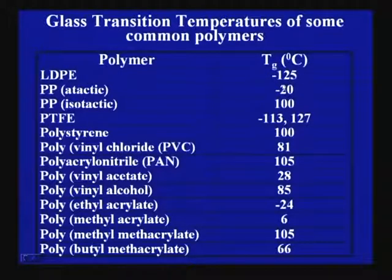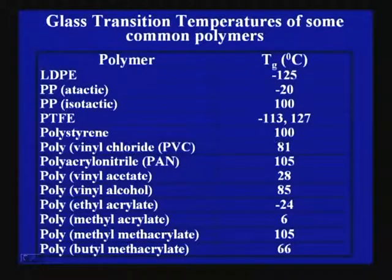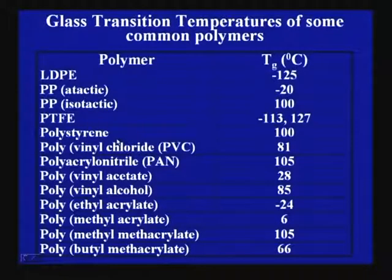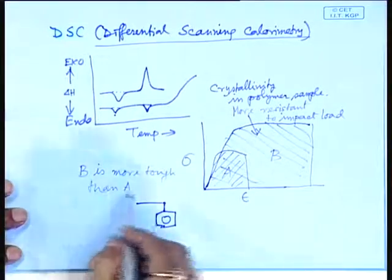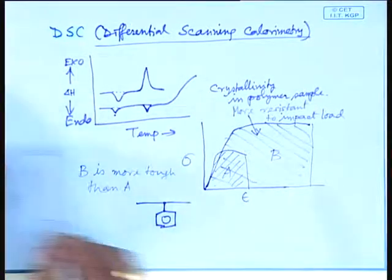If you see some value in some report, paper, journal, or book — it may be written minus 115 degrees — it is not wrong; that is the value reported from one particular experiment. You may have seen minus 125 degrees in a book; both are right. It gives a general idea of Tg values for different polymers. Comparing Tg of polystyrene at 100°C with LDPE at minus 125°C: polystyrene contains one pendant phenyl ring, which makes the polymer rigid.